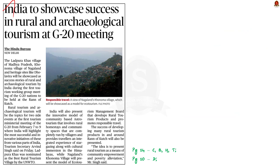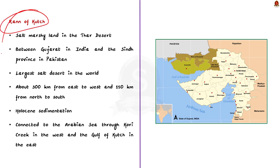India will showcase success stories of rural and archaeological tourism during the first Tourism Working Group meeting of G20 nations, to be held at the Rann of Kutch in Gujarat. The idea is to present rural tourism as a means of community empowerment and poverty alleviation. The Lattpura Kaas village of Madhya Pradesh, Khonoma village of Nagaland, and heritage sites like Dholavira will be showcased. Lattpura Kaas was nominated as the Best Rural Tourism Village by UNWTO (World Tourism Organization).